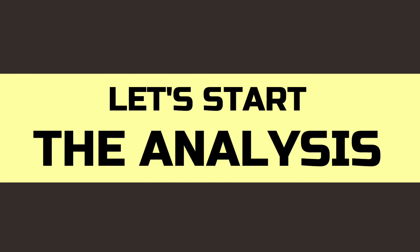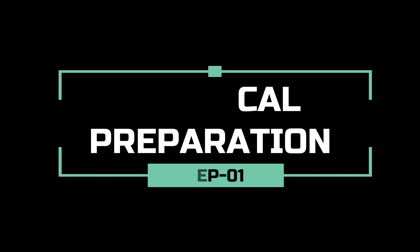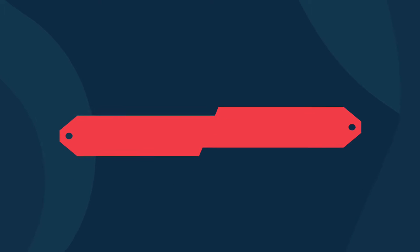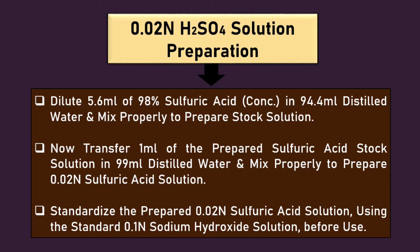In this step we will learn about chemical and reagent preparation. To prepare 0.02 normal sulfuric acid solution, first dissolve 5.6 ml of 98% sulfuric acid into 94.4 ml distilled water to prepare the sulfuric acid stock solution. Then dilute 1 ml of the prepared stock solution into 99 ml distilled water.